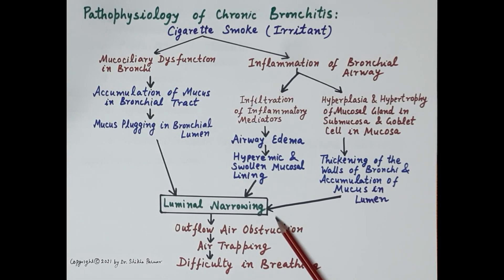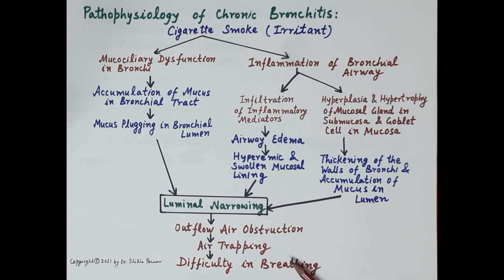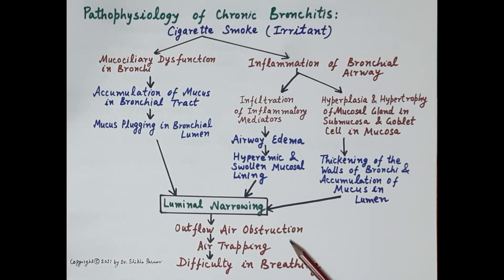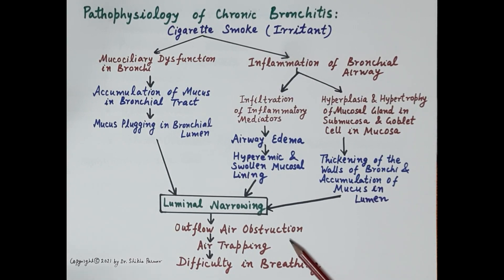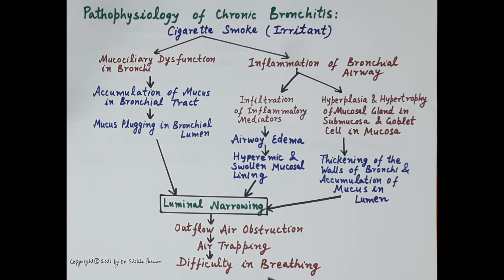All these factors together — thickening of the bronchial wall, mucus accumulation, mucus plugging, and airway swelling — result in narrowing of the lumen and difficulty in breathing, specifically during exhalation. Chronic bronchitis is therefore an outflow air obstructive disease, resulting in trapping of air in the lungs and difficulty in breathing.